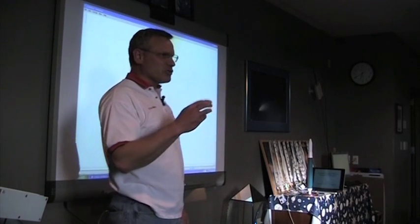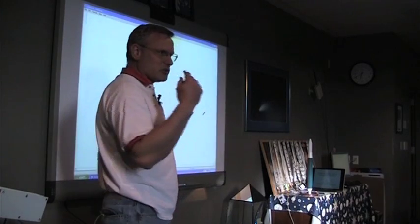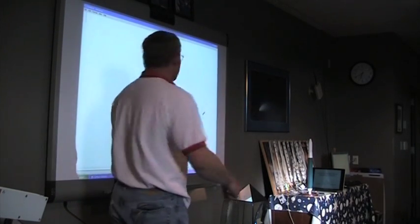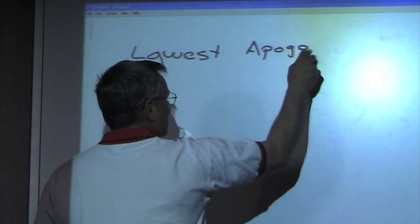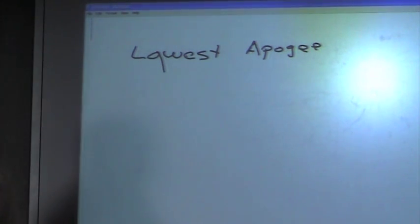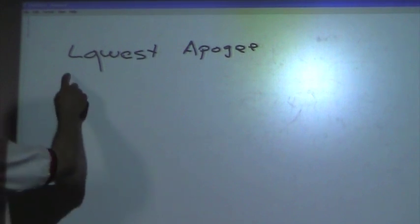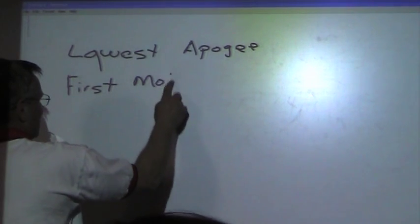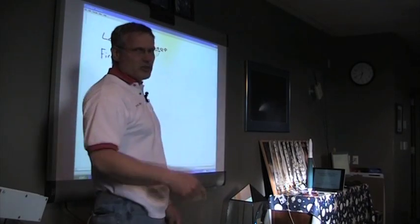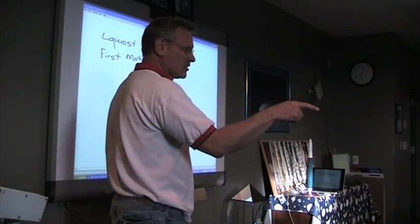In your contest, there's basically three rules for how you're going to win, right? What's the first one? Lowest apogee. Okay. What's the next one? First motion. And what's the next one? Last to land.